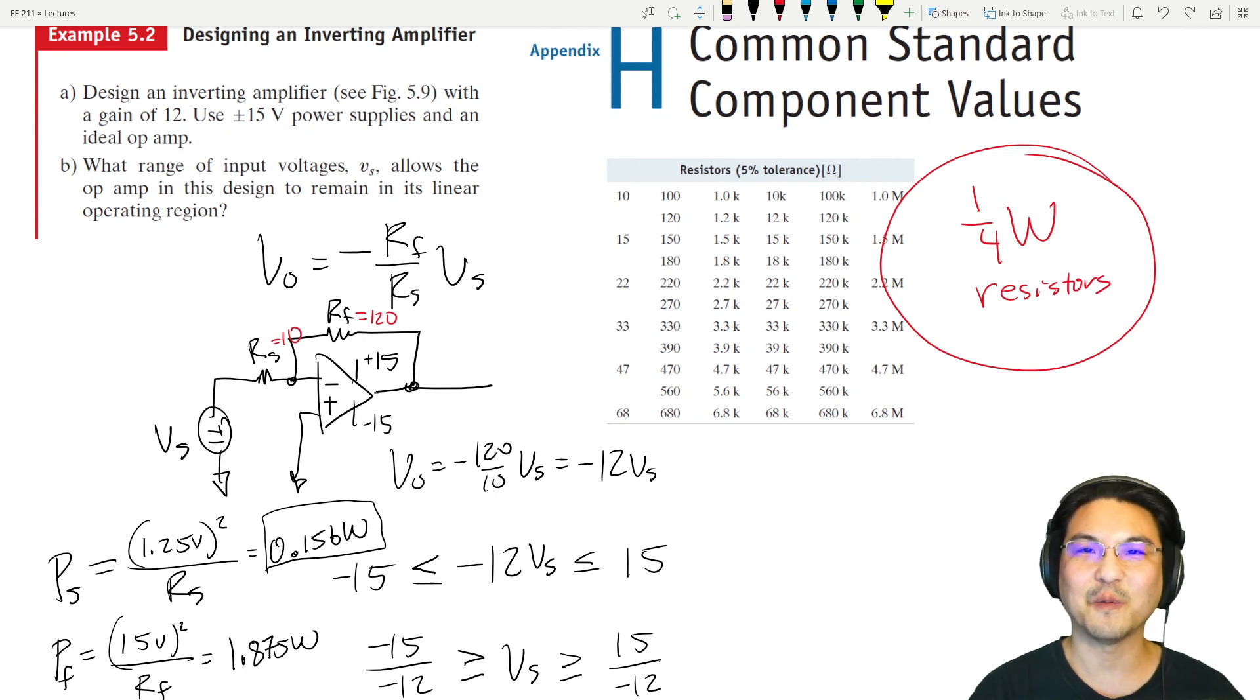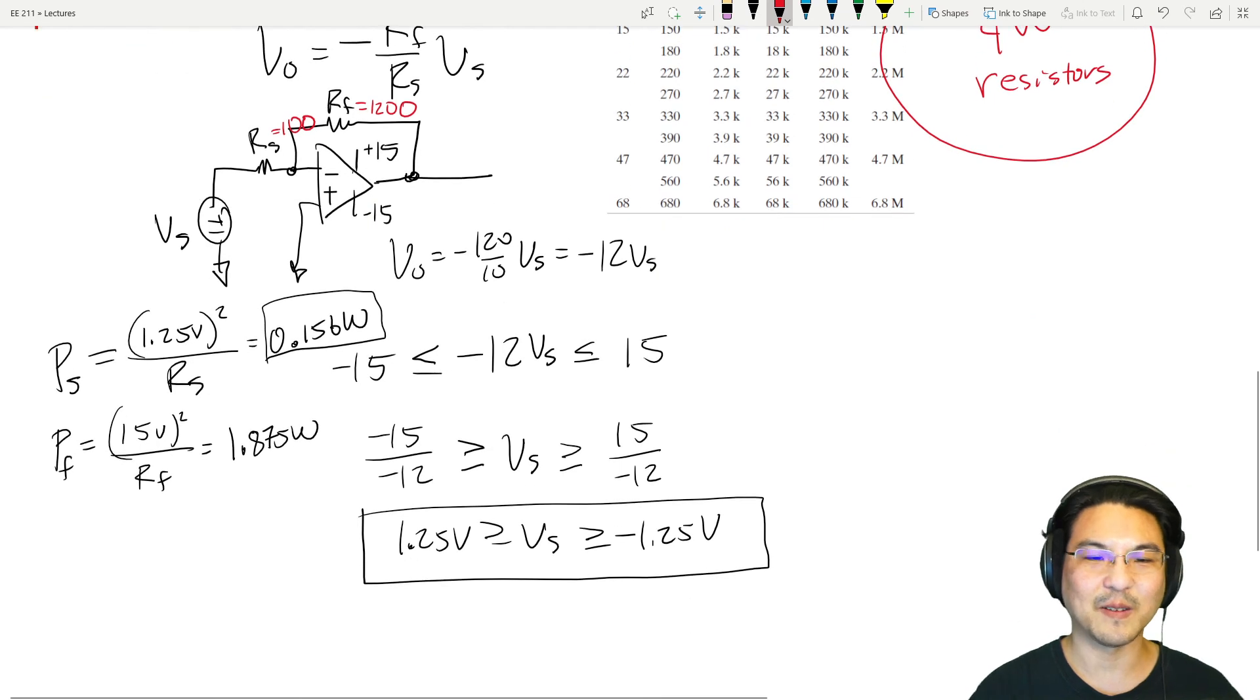What if we step it up? Instead of 10 and 120, let's go up to 100 and 1200. Like this, we still have the same gain of 12. It's not going to affect this number, so it's not going to affect our input range where it won't saturate. Everything else is fine.